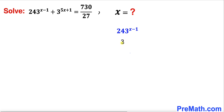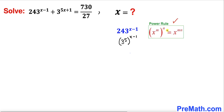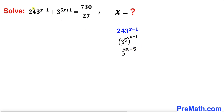Therefore this could be written as 3 power 5, whole power x minus 1. Now let's recall the power rule of exponents. According to this rule we can multiply out the nested exponents, so this is going to become 3 power 5x minus 5. So I am going to replace this part by this simplified one.